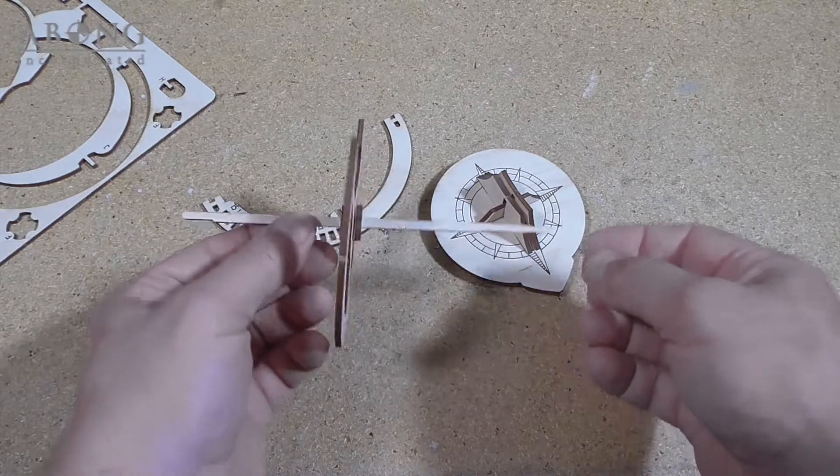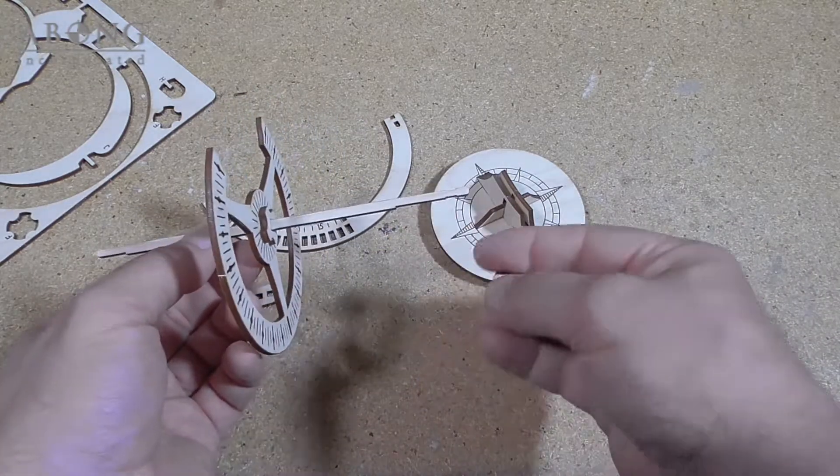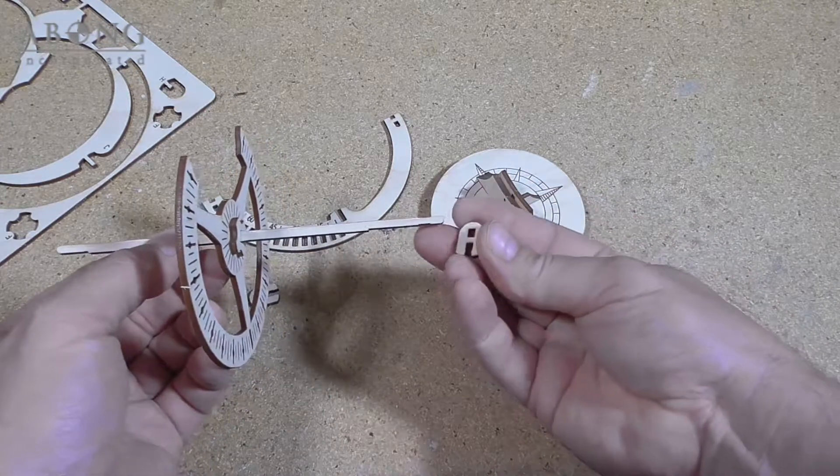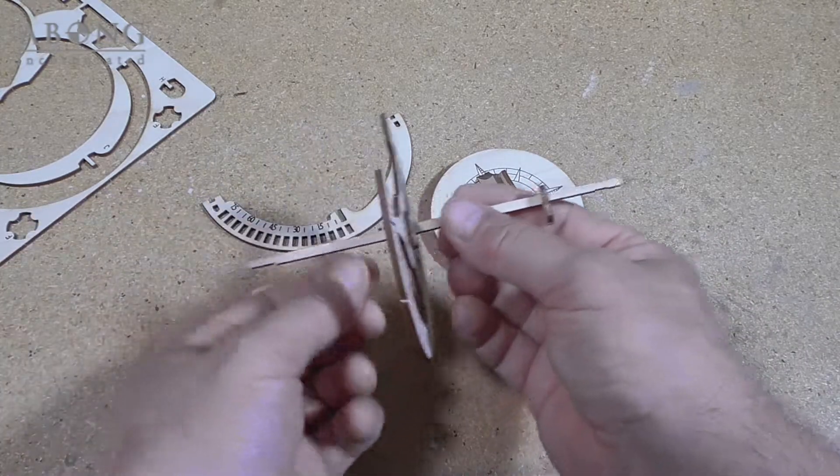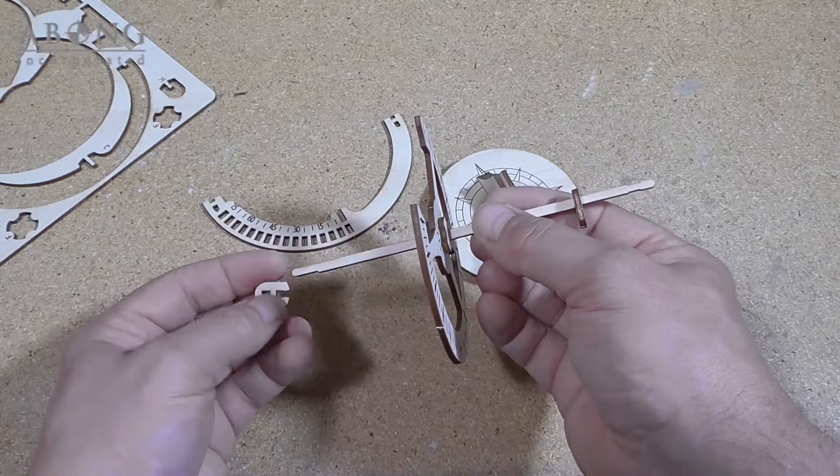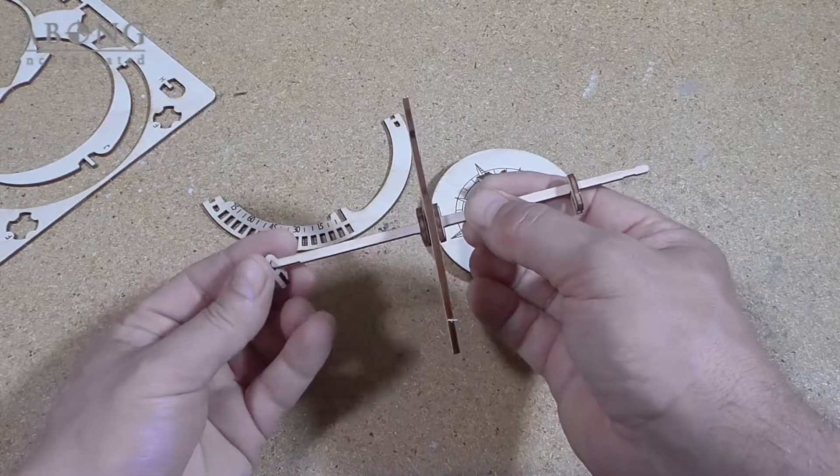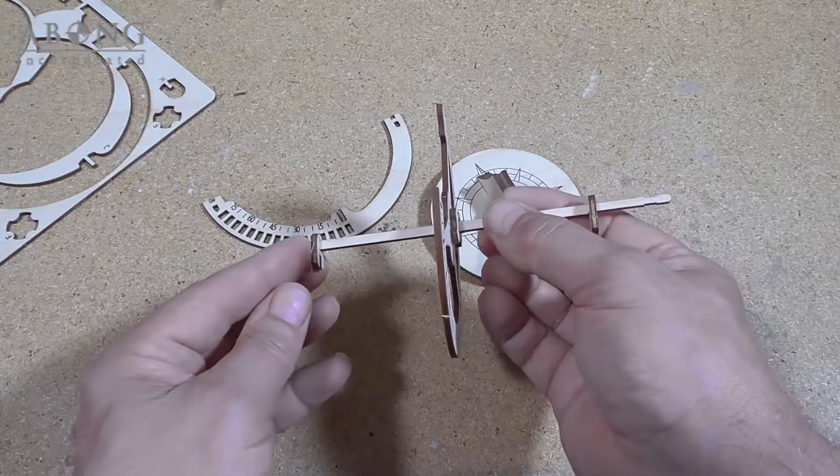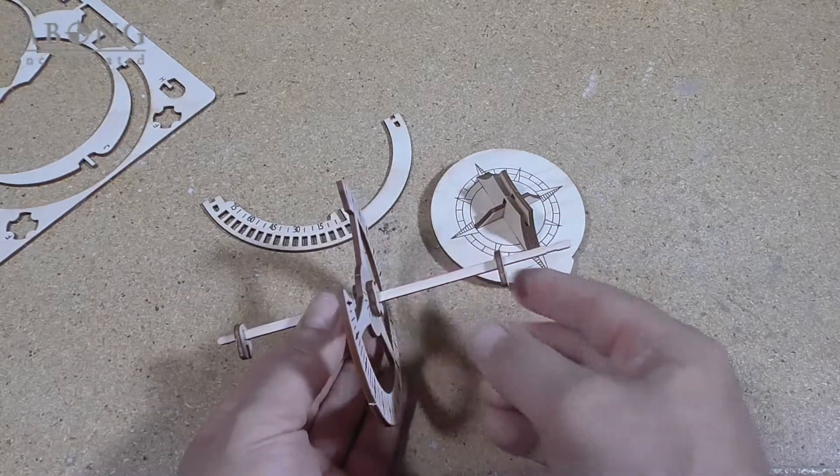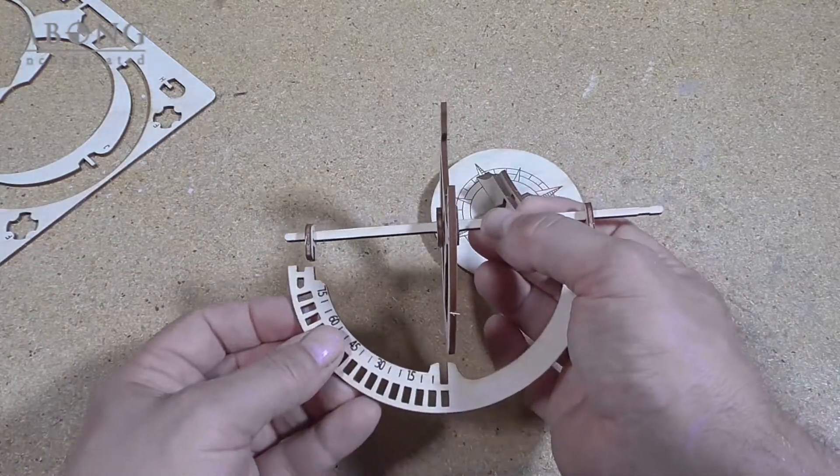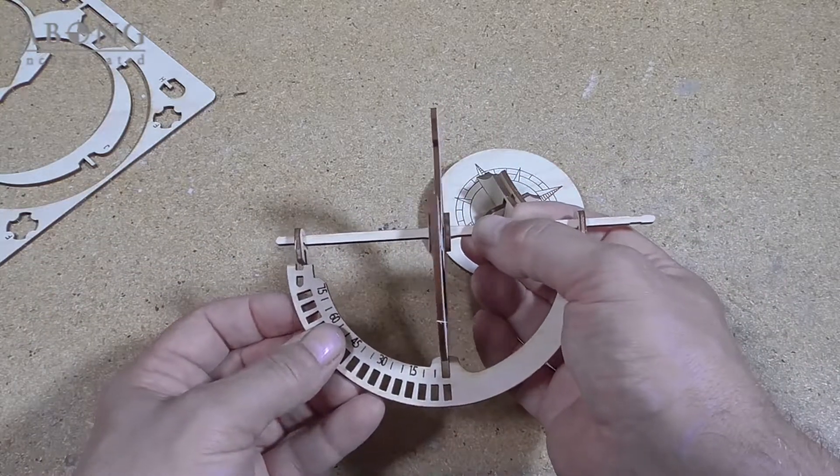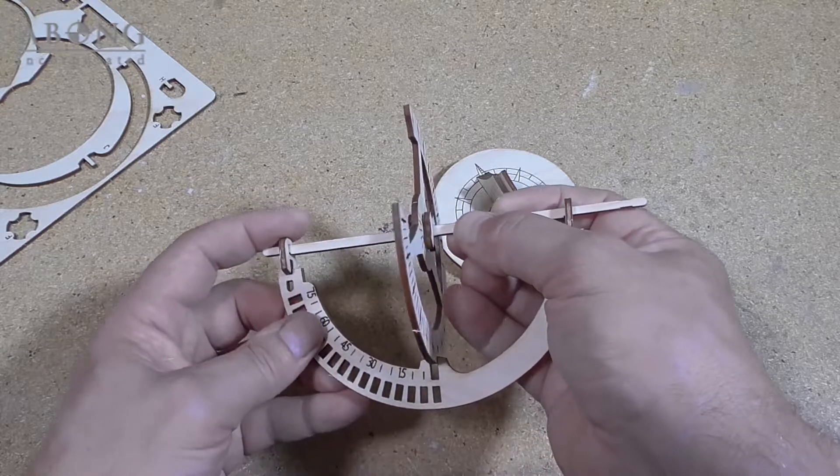So the H parts, where this notch is, they go this side down. Like that. And like this. And then there's a short side and a long side. The short side goes to the side where all the slots are.